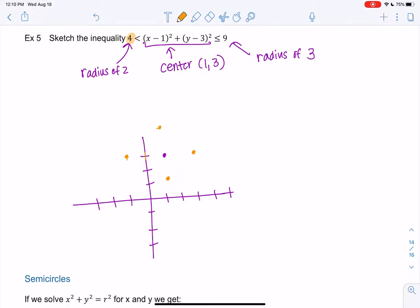And then because it doesn't have the or equal, I'm going to draw a dashed line because it can't equal this circle. Okay, that's a really terrible circle, but you get the idea.